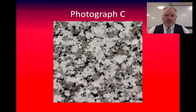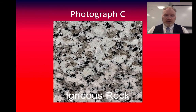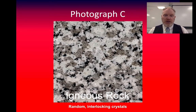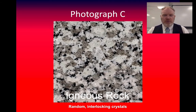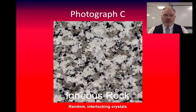Photograph C is a picture of a polished surface of a rock, and it's an igneous rock. We can tell this because we have these randomly arranged interlocking crystals. This particular igneous rock is an example of a granite, because we find a mineral called quartz in it and those crystals are actually relatively large — although notice there's no scale on this photograph, which does mean we can't really judge exactly how big those crystals are.